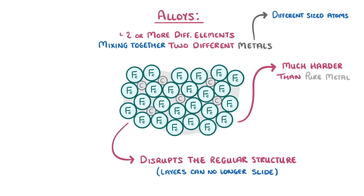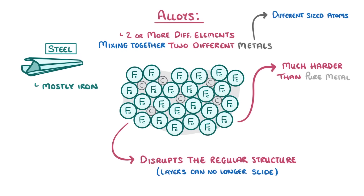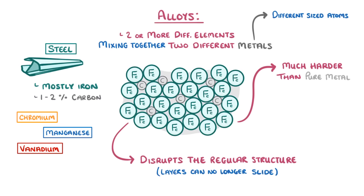In our example here we've shown steel, which is made up mostly of iron but also contains 1–2% carbon. It also sometimes contains chromium, manganese, or vanadium, depending on which properties we want it to have. And this gives it the strength that it needs to be used in things like cars and planes.